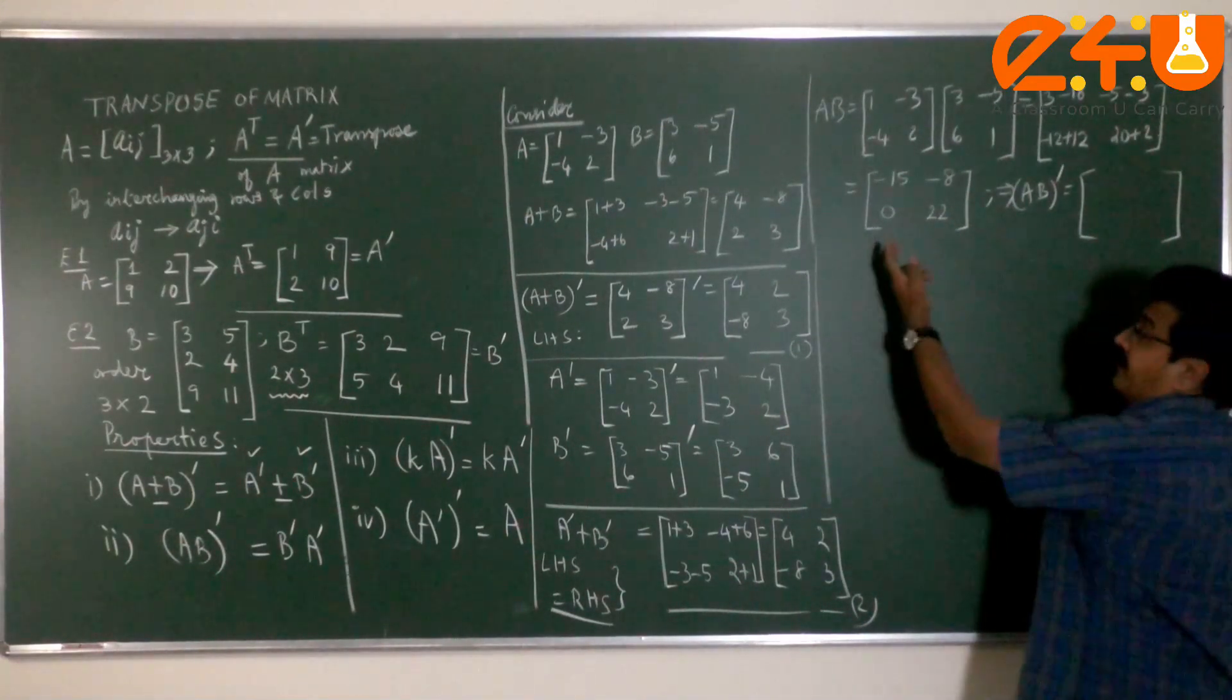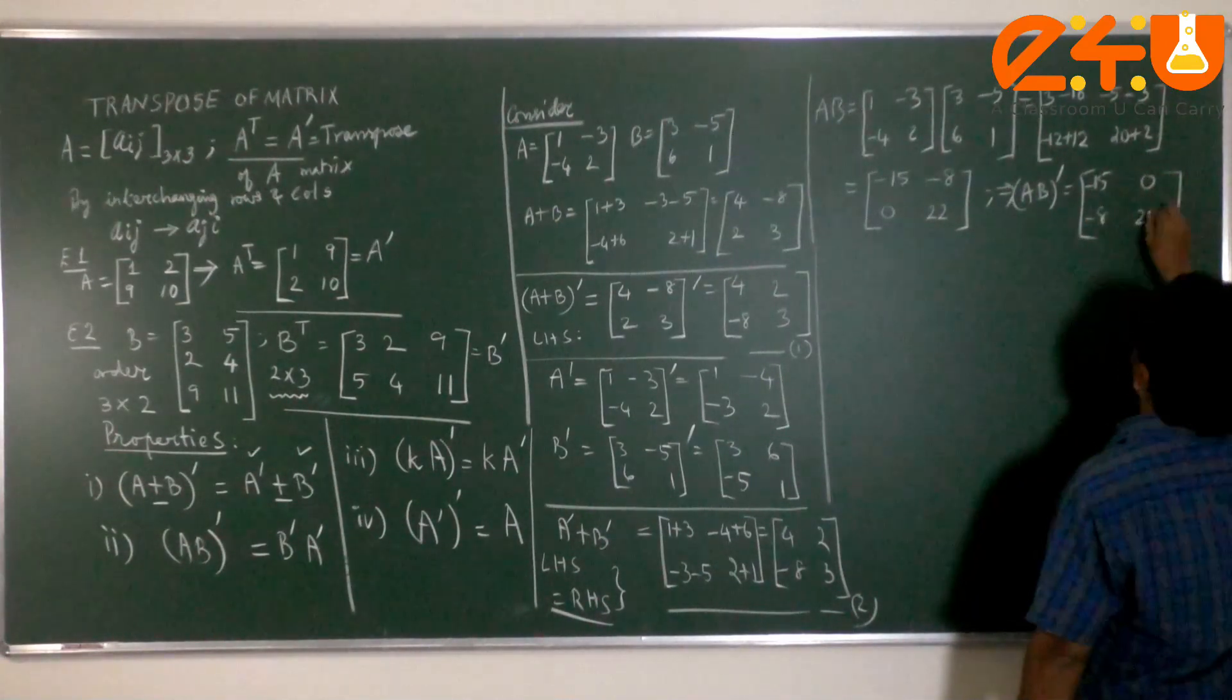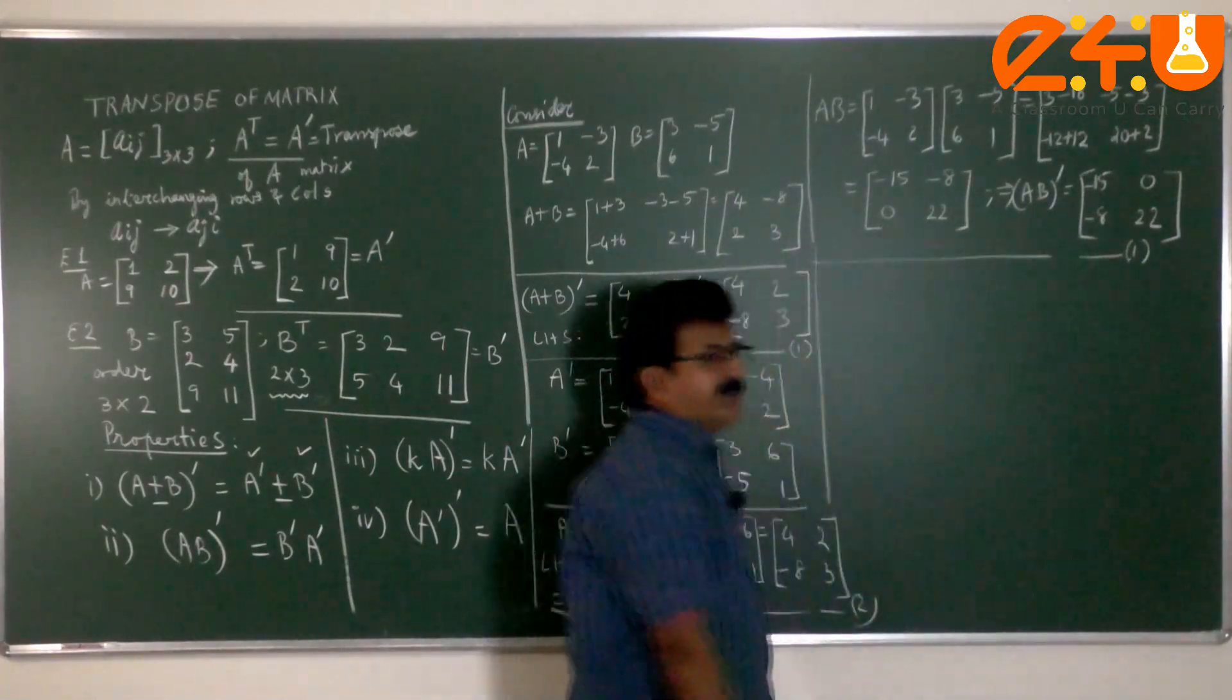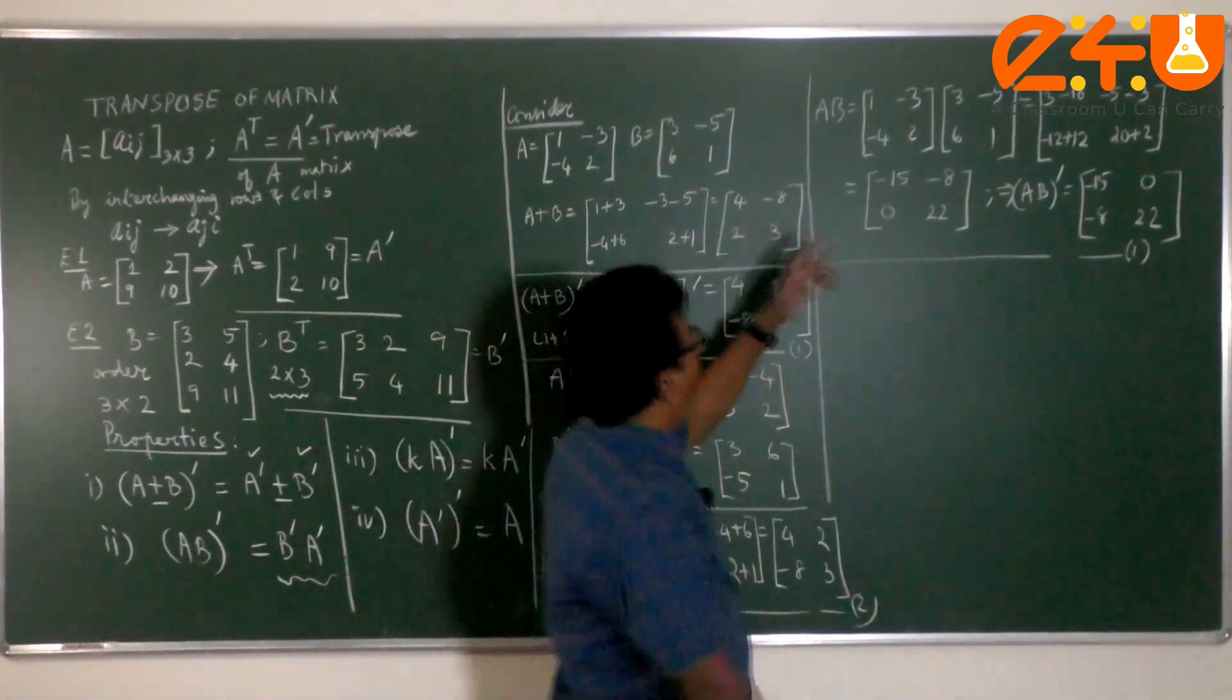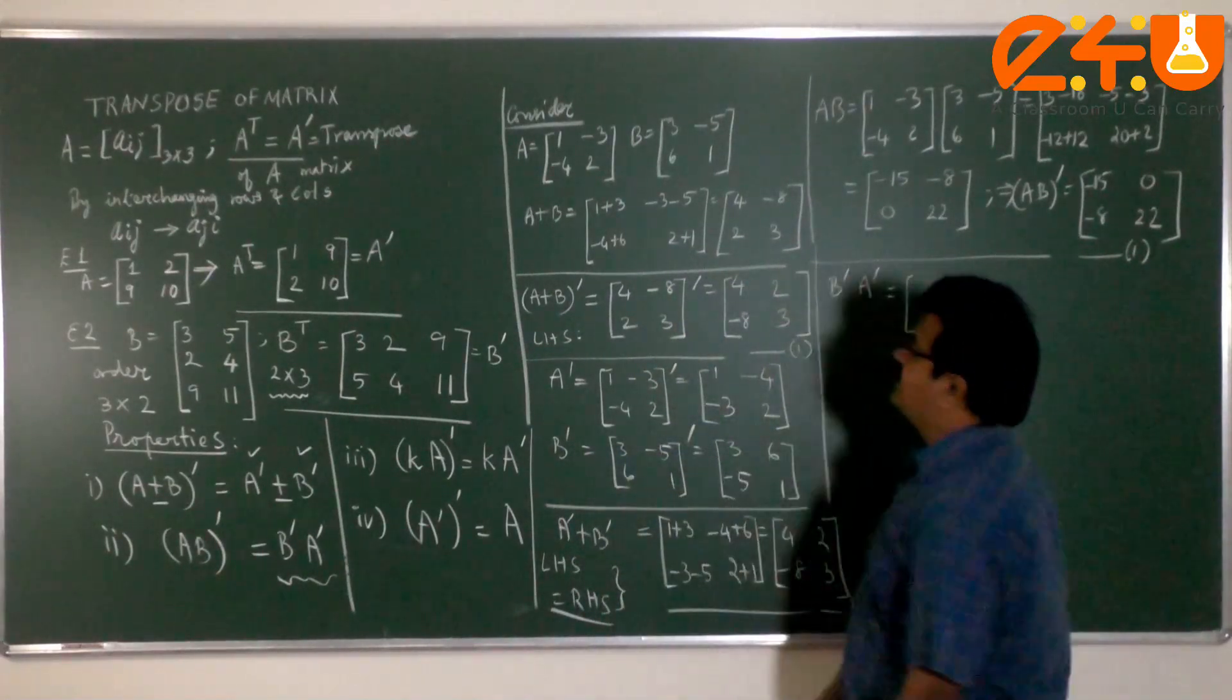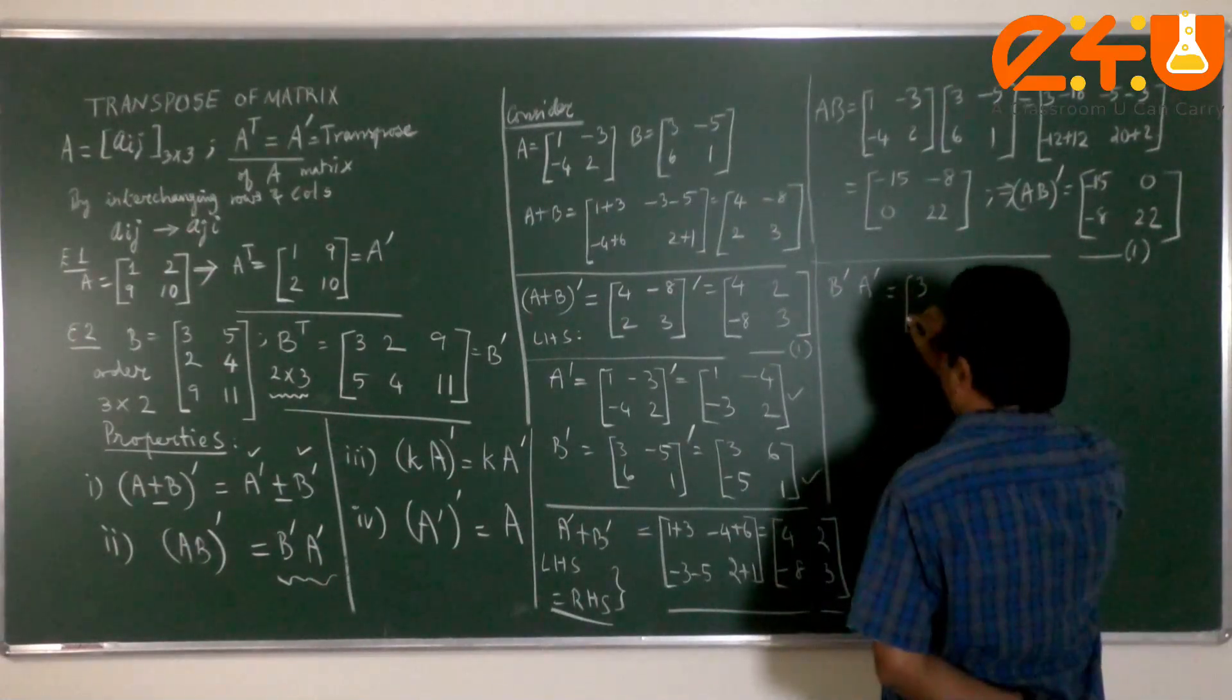I can immediately apply the transpose of A, B. The rows and columns interchanged will become minus 15, minus 8 in column 1, 0 and 22 in column 2. Let me store this as result 1. What about the RHS? Understand it need not, it should not be done in the same order. We have to multiply B transpose in position 1. Take B transpose, which is already available here when we were doing the addition. B transpose is available, A transpose is available.